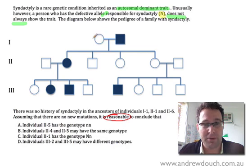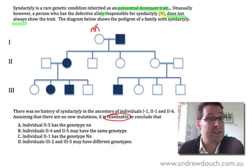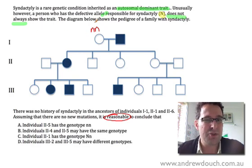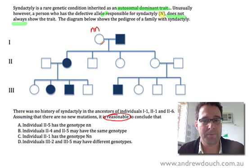So here's 1-1 here, obviously doesn't have syndactyly. So we can assume that her genotype is little n, little n. We can assume that because there's no history of syndactyly in her family. And because syndactyly is a dominant trait, even though it doesn't show up in everybody who has the allele for it, nevertheless, if it's a dominant trait and there's nobody in the family who's ever had syndactyly, we can assume that she's homozygous for the recessive, the normal allele.